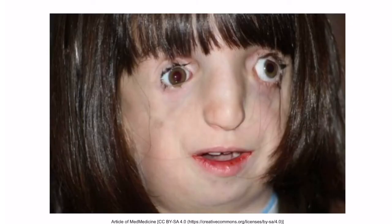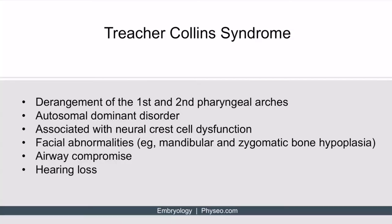Here is a picture of a patient with Treacher-Collins syndrome, which highlights some of the characteristic facial features. To summarize: Treacher-Collins syndrome is caused by derangement of the first and second pharyngeal arches. It's an autosomal dominant disorder associated with neural crest cell dysfunction and presents with facial abnormalities such as mandibular and zygomatic bone hypoplasia, as well as airway compromise and hearing loss.